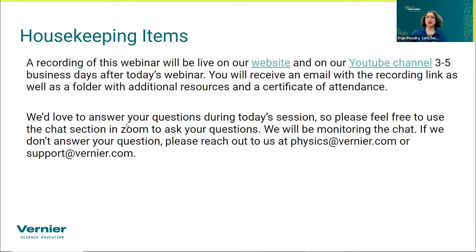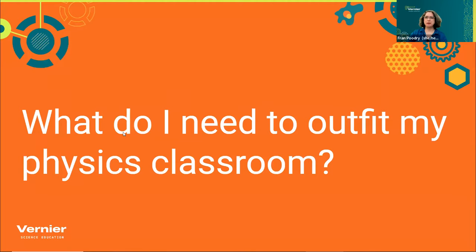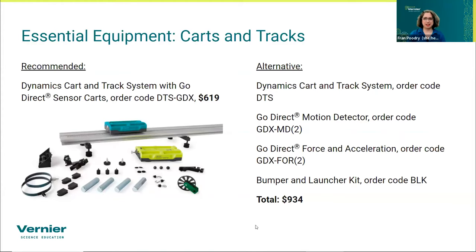The big question: what do I need to outfit my physics classroom? I'll start with what I think is probably the most fundamental thing — you need carts and tracks. We recommend the Dynamics Cart and Track System with Go Direct Sensor Carts, which comes with everything you see in the picture. If you already have carts and tracks, you can go with motion detectors. There's also a less expensive system without sensor carts.